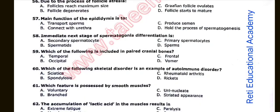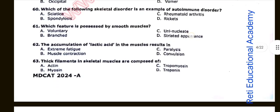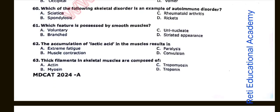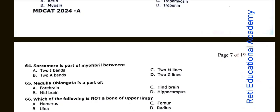Question number sixty: Which of the following skeletal disorders is an example of an autoimmune disorder? The correct option is C. Question number sixty-one: Which feature is possessed by smooth muscles? The correct option is C: Uninucleate. Question number sixty-two: The accumulation of lactic acid in the muscles results in A: Extreme fatigue. Question number sixty-three: Thick filaments in skeletal muscles are composed of. Option B is correct: Myosin. Question number sixty-four: Sarcomere is a part of myofibril between D: Two Z lines.